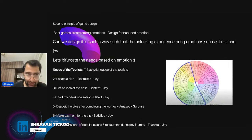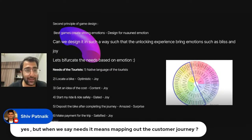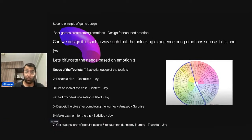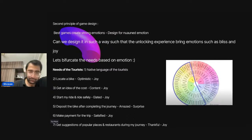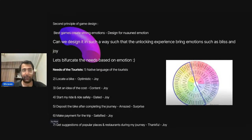That's the second principle of game design: always create flows which take users toward strong emotions. Map the user journey and when identifying needs, tie each one to an emotion — ask what emotion will this actually invoke in the product. This is slightly advanced content. For those who are new to this stream, I'd recommend going back to the previous lecture where we covered the general product design method, as most of the foundational questions are answered there.